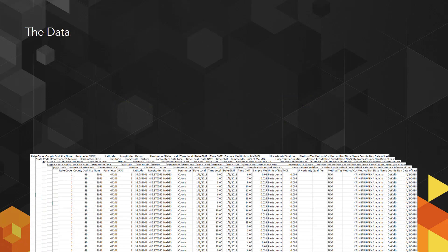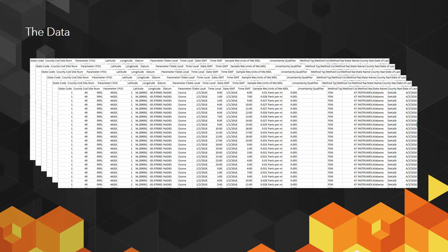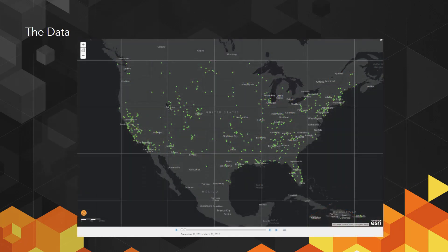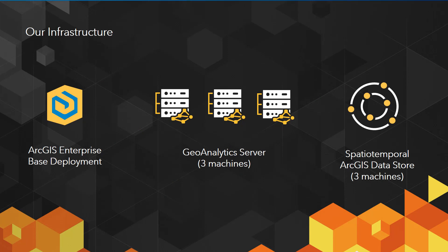First, let's take a quick look at the data. Our data spans six years and is stored in six separate CSVs in an Amazon S3 bucket. Geoanalytics is going to read directly from these CSVs without any preprocessing needed. In our data, we have about 300 static sensor locations that have been taking hourly ozone measurements for the past six years. In total, we've accumulated 55 million records that we want to mine through. For this analysis, we're going to be using a Geoanalytics Server deployment with three machines, and a total of 18 cores and 72 gigabytes of RAM available across the deployment for analysis.